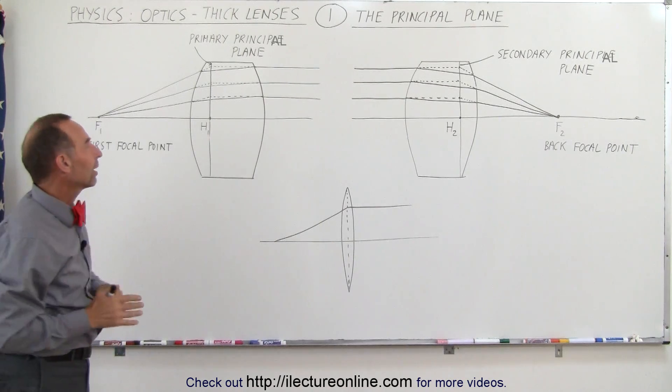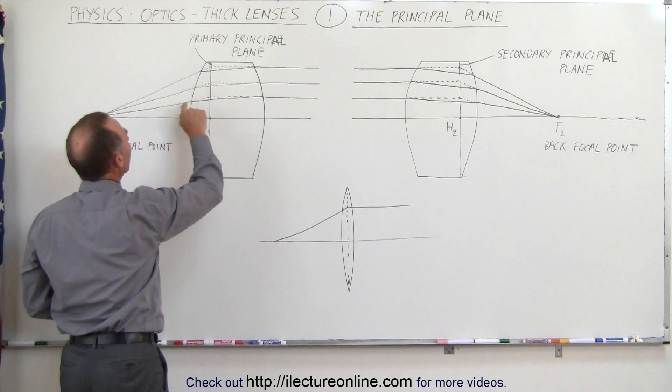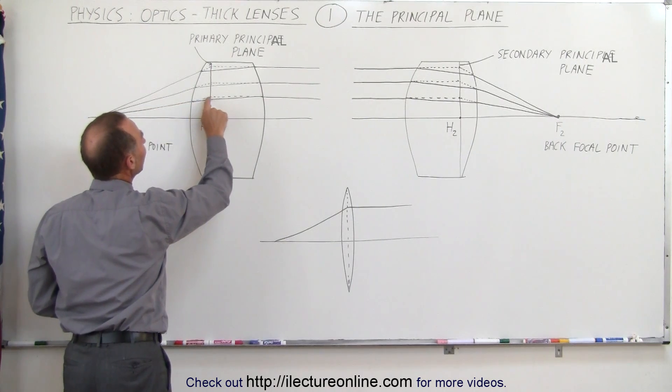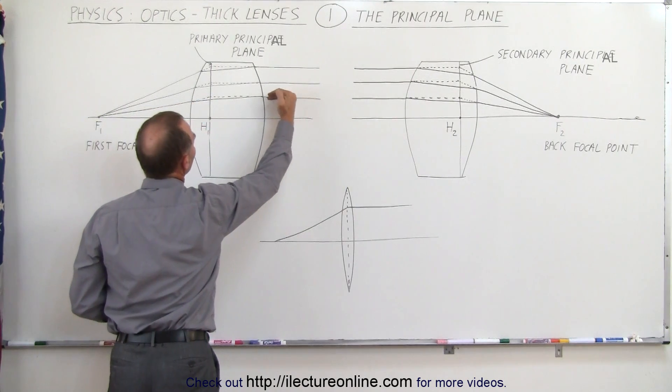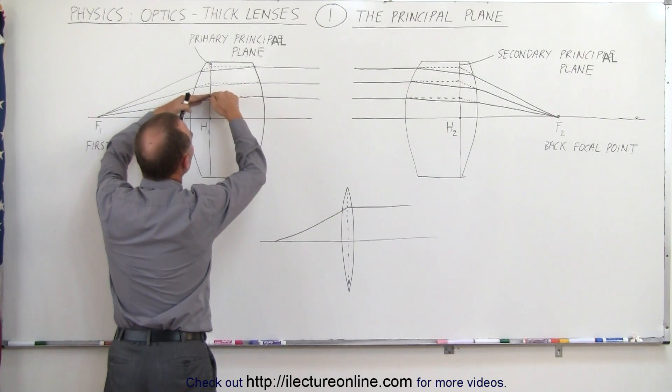If we were to ignore that for a moment, if we were to assume that the ray would continue in a straight line path, notice the dashed line indicates that, and if we draw a dashed line from here horizontally where those two meet, there's a specific point right there.